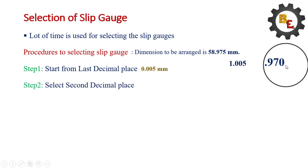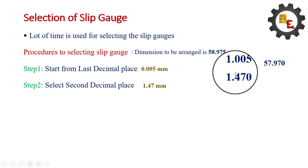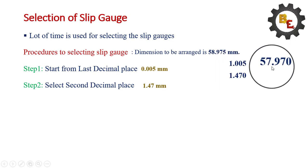Step 2 is select the second decimal place. Here the second decimal place is 7. So select the gauge of 1.47 mm. Now, we have to reduce the 1.47 from this value. The remaining value is 56.5.